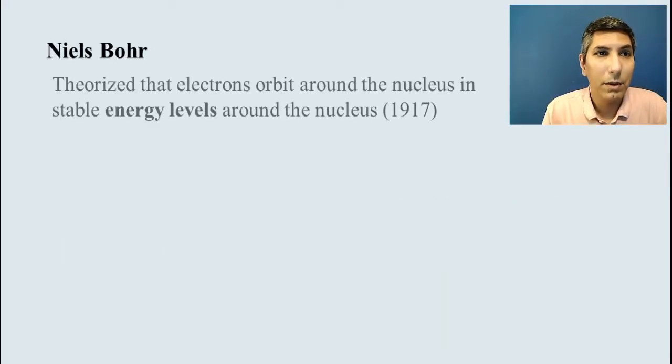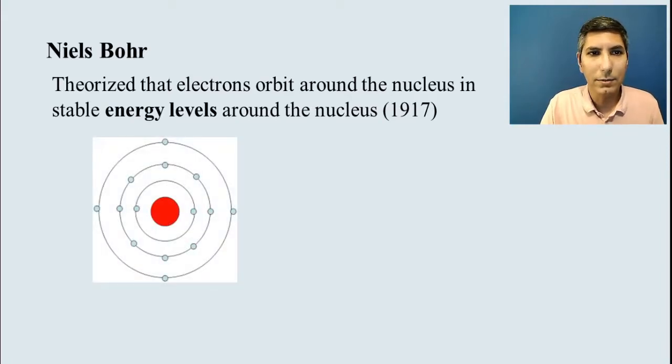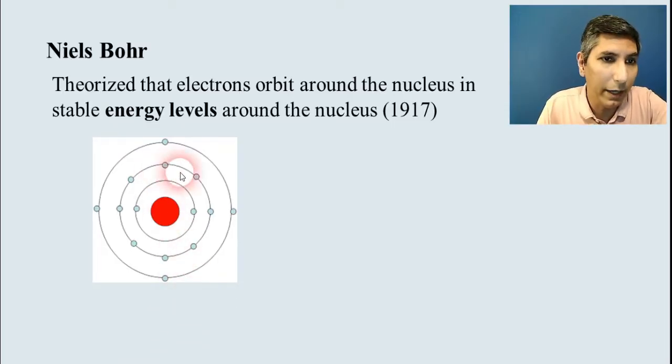Now, if we go forward a bit more, we have Niels Bohr. And he was thinking about electrons as well. And his theory, his evidence showed that electrons existed in these energy levels. And they were spinning around the nucleus. Now, he did not have an exact idea as to what these energy levels looked like. But he theorized, or he hypothesized, that they looked kind of like this, where these atoms had electrons that were basically orbiting the nucleus, kind of like planets do in the solar system. These circular energy levels. This was his idea.